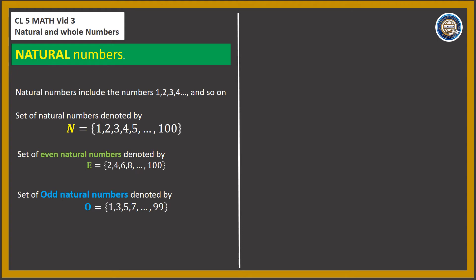Similarly, if we talk about odd natural numbers, then our odd natural numbers up to 100 end at 99, which is our last odd number. We represent the set of odd numbers with O: O = {1, 3, 5, 7, ..., 99}.